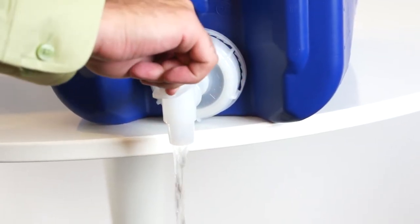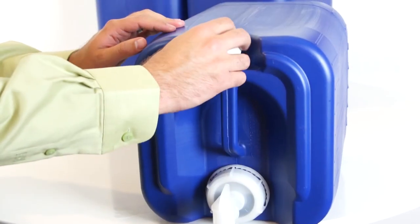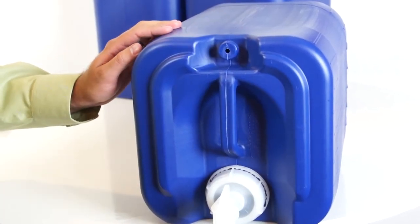Now you can place the container on its side and use the spigot. For better water flow out of the spigot, unscrew the cap on the breathing valve and poke a small hole through the plastic.